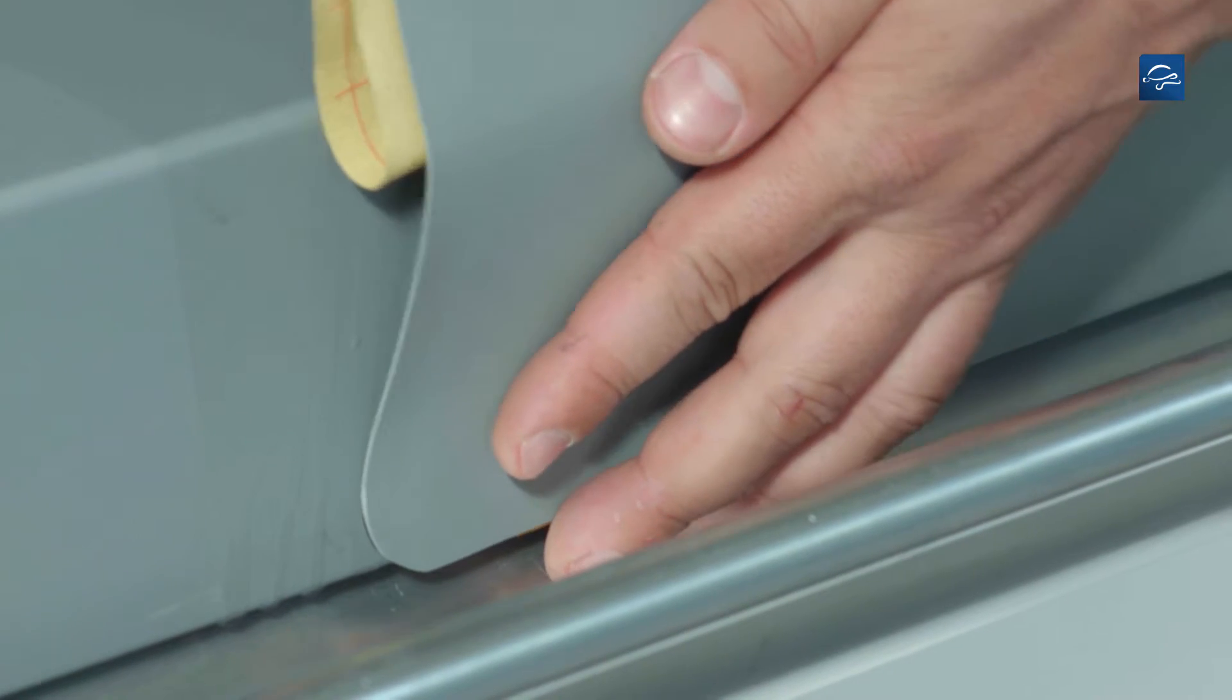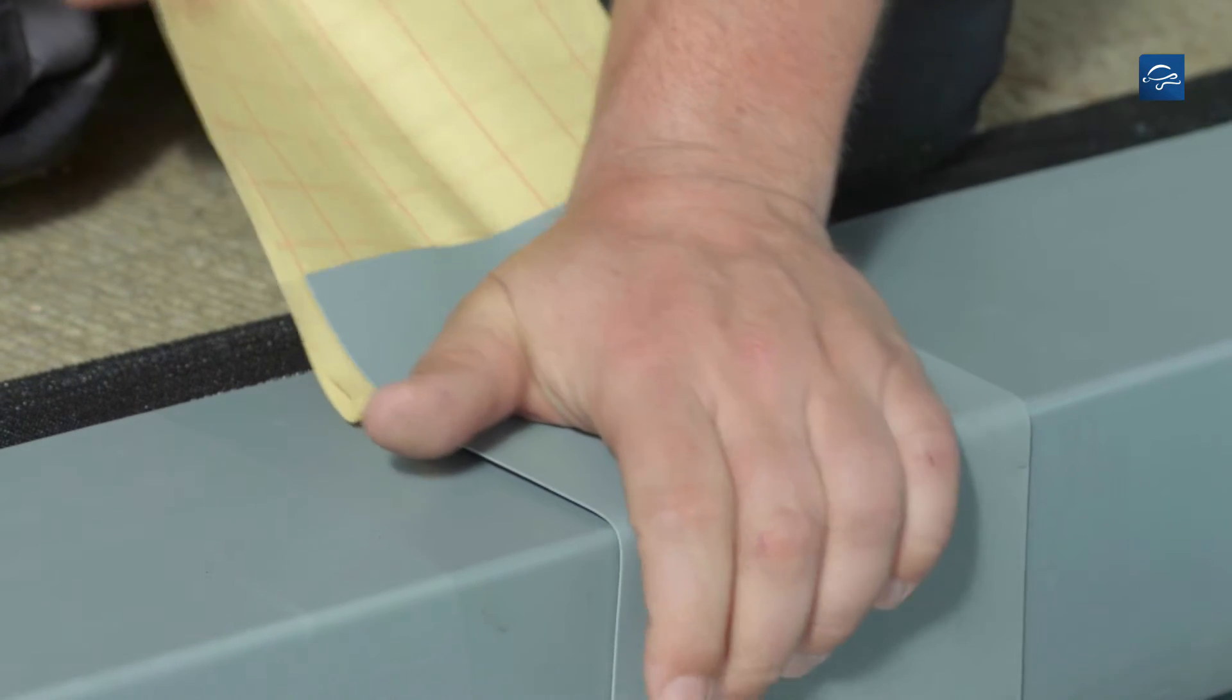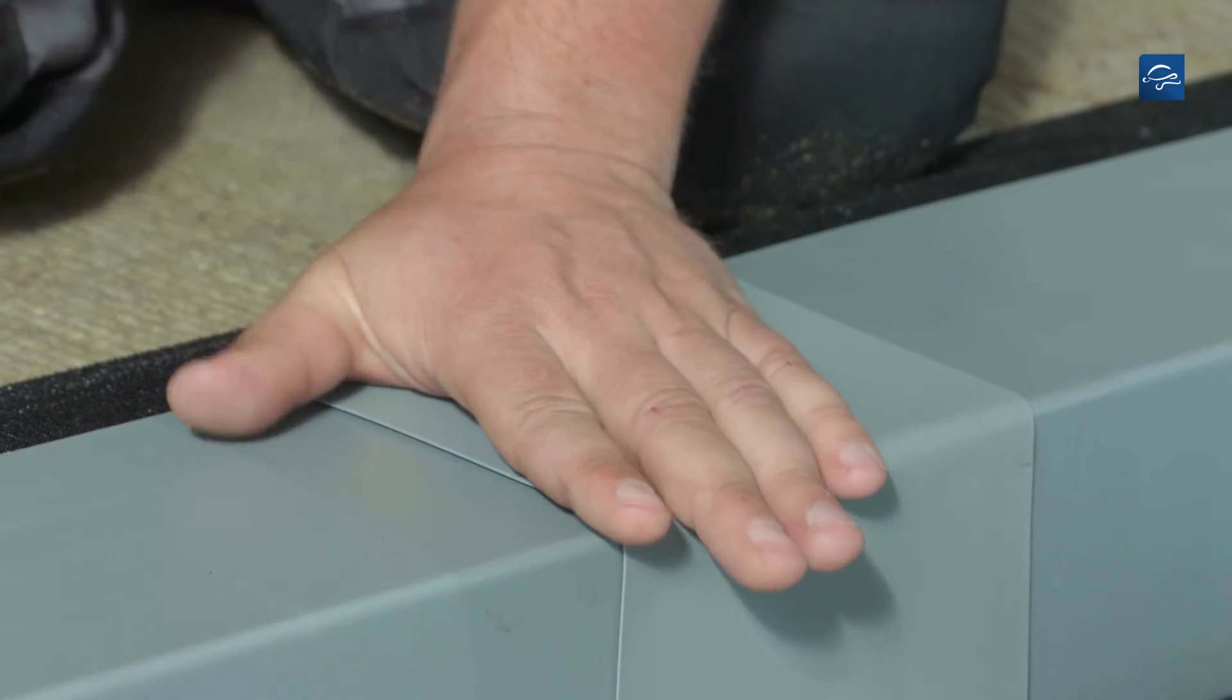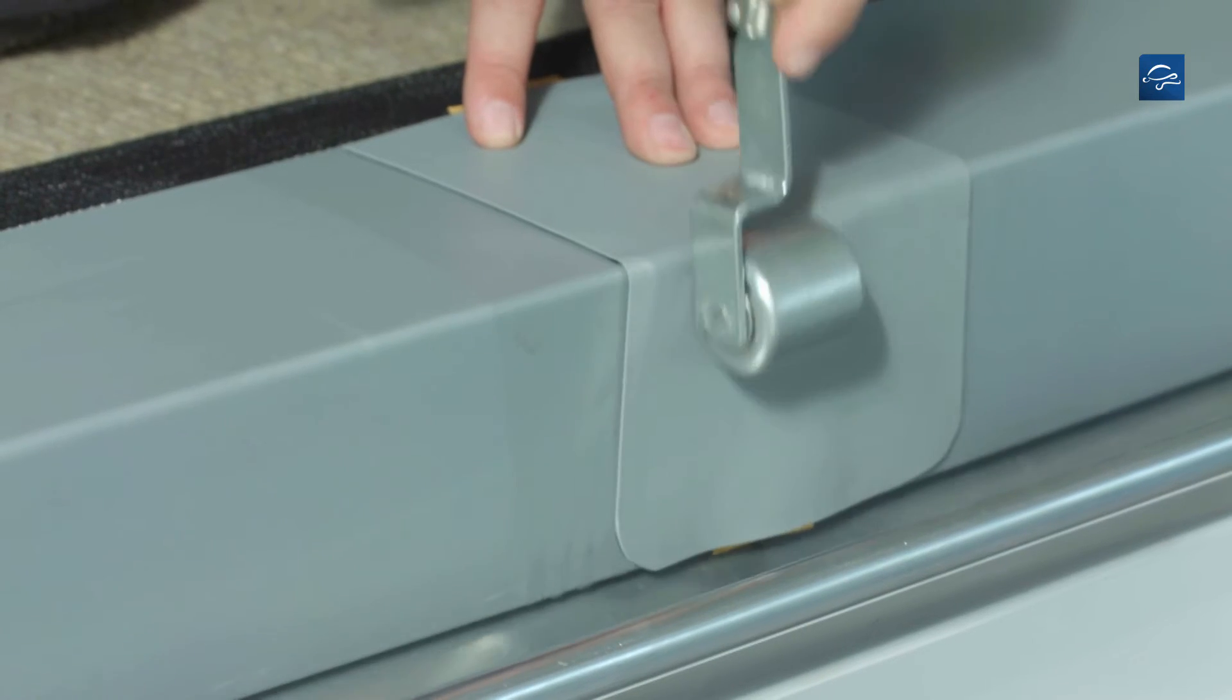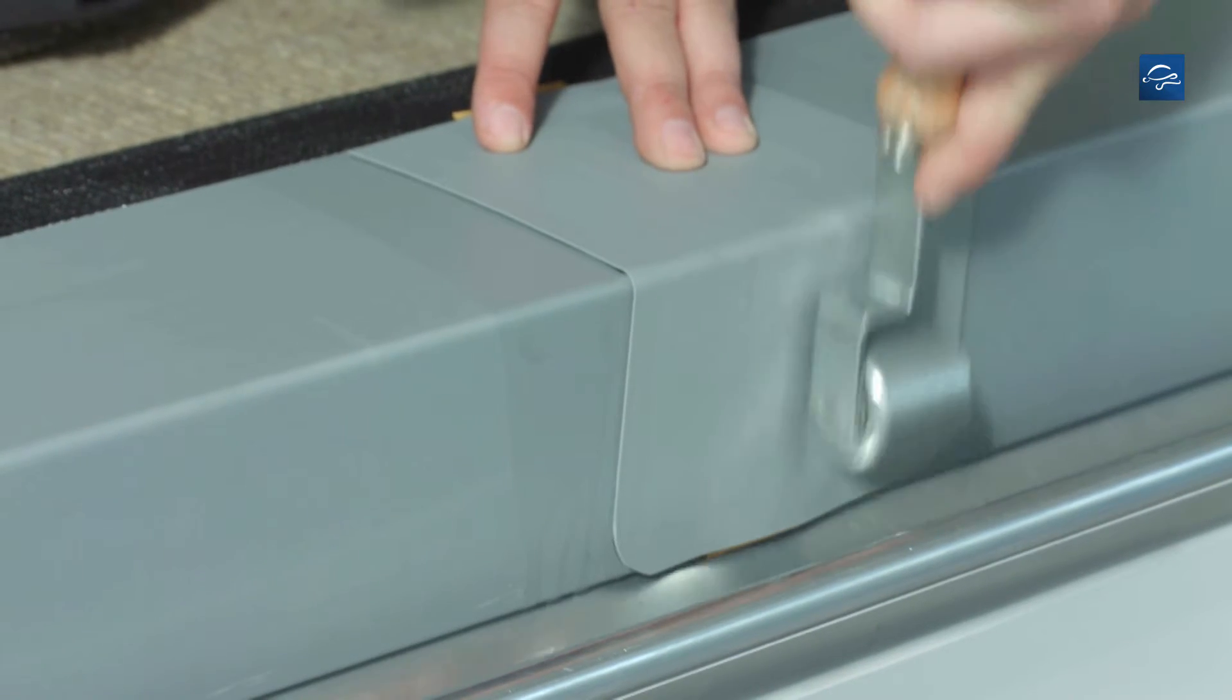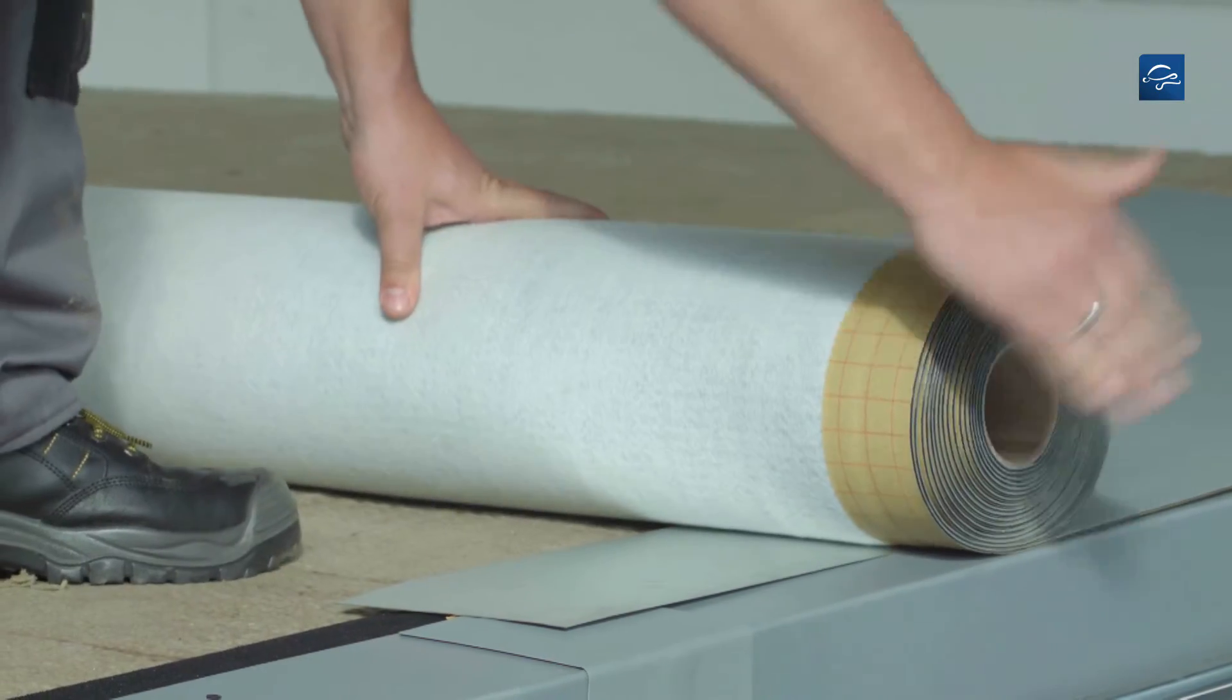Now you can pull out the remaining release film from under the cover tape and fully press on the tape. Use the roller to ensure a reliable seam connection.